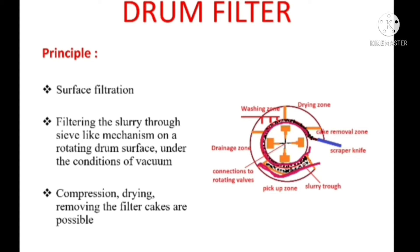All this process is carried out under vacuum. The curved surface has a number of perforations, and above the perforated plate the filter cloth is placed, so filtration occurs through a sieve-like mechanism. The slurry is filtered through this sieve-like mechanism on the rotating drum surface under vacuum conditions, and liquid travels through the internal pipe to the collecting tank. In addition to filtration, compression, drying, and removing the filter cake are all possible using this drum filter.